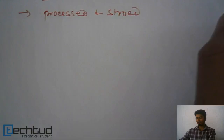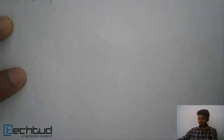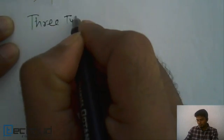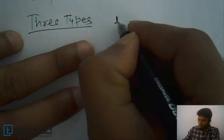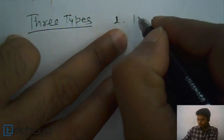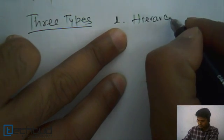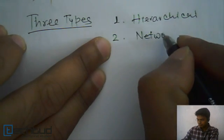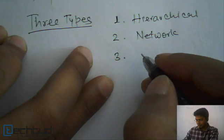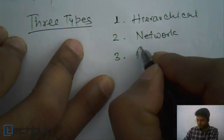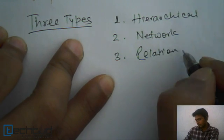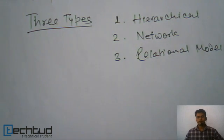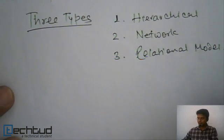We have three kinds of data models: the first one is the hierarchical model, the second is the network model, and the third — which is our main concern for this study — is the relational model. We will understand each one by one.